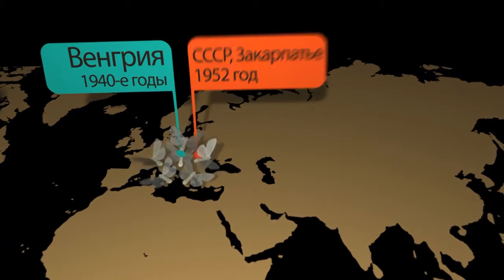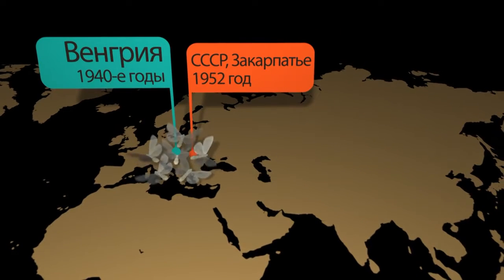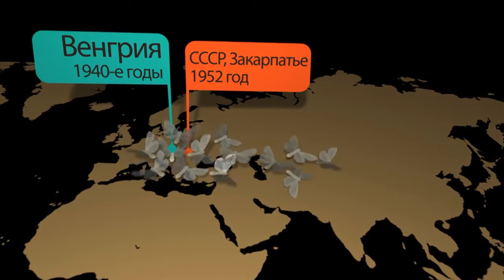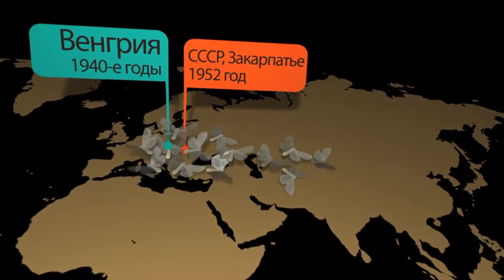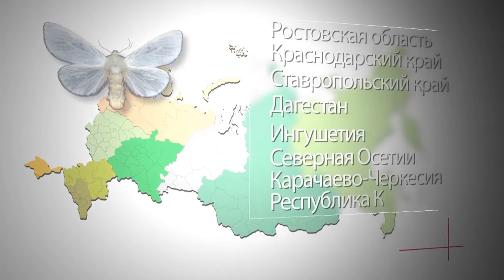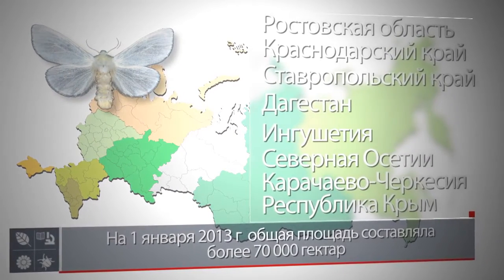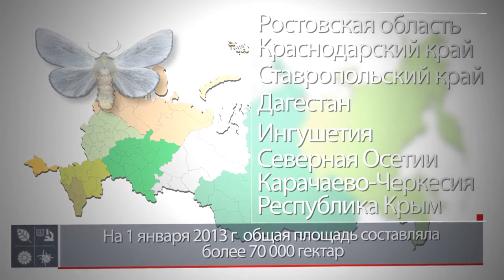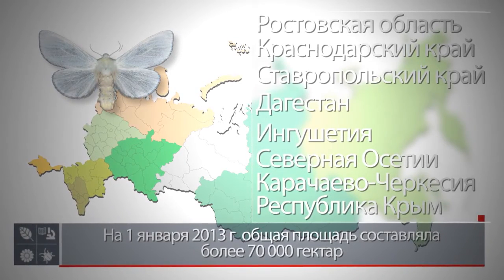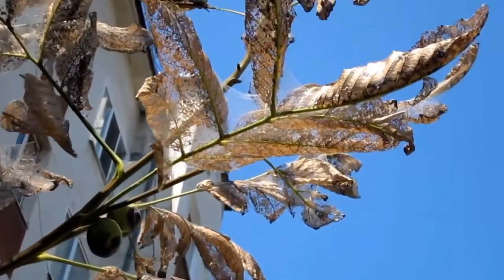На территории бывшего СССР вредитель проник в 1952 году в Закарпатье. С данного времени он активно продвигался в южном и юго-восточном направлении. В настоящее время вредитель распространился на значительной территории юга России: это территория предкавказского региона, Ростовской области, Краснодарского края. На данный момент вредитель в некоторой степени стабилизировал свой очаг в пределах этого региона. В благоприятные годы возможно незначительное расширение ареала в восточном направлении.